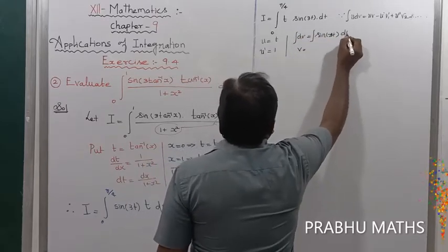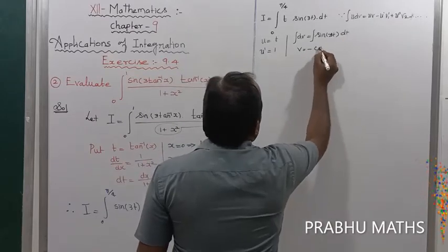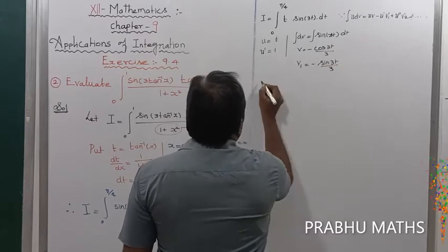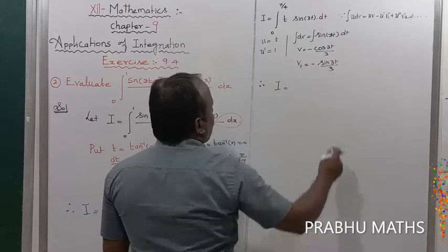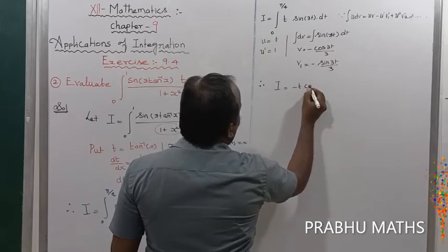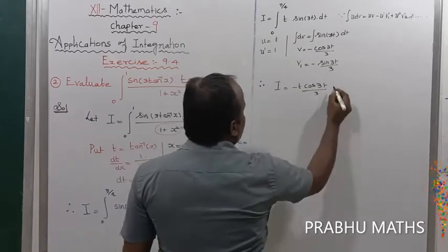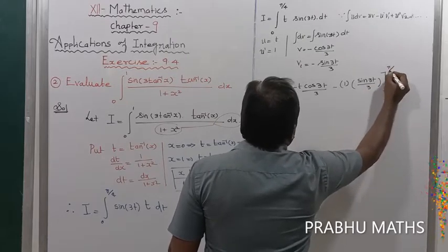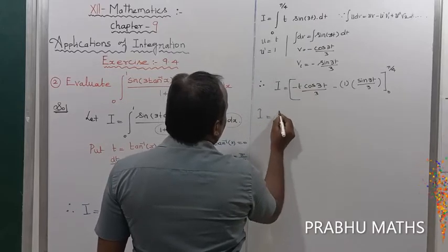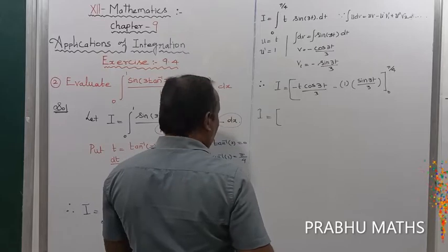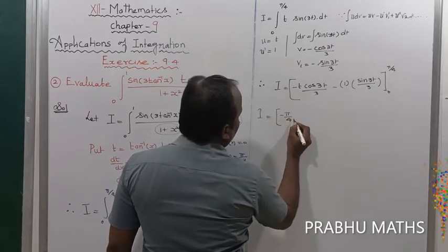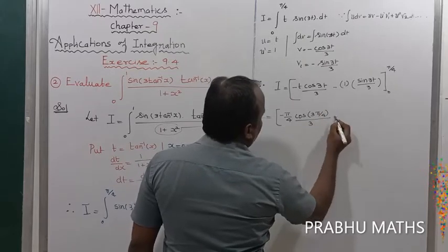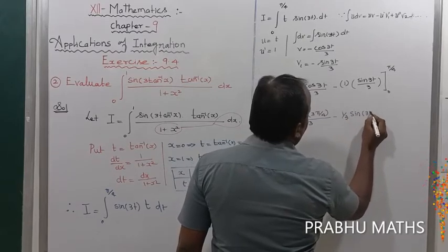Integrating sin(3t) gives v₁ = −cos(3t)/3. Applying Bernoulli's formula: i = [−t·cos(3t)/3 − (1)·(−sin(3t)/9)] from 0 to π/4, which simplifies to [−t·cos(3t)/3 + sin(3t)/9] evaluated from 0 to π/4.